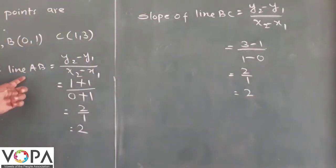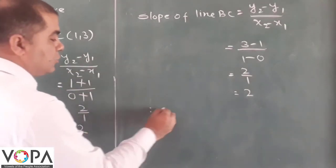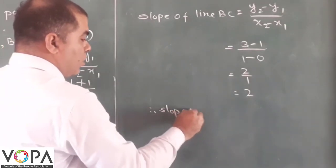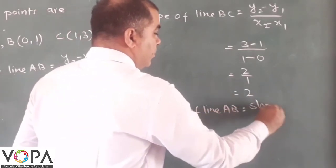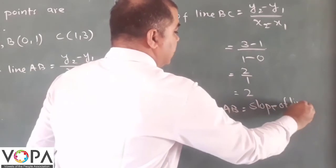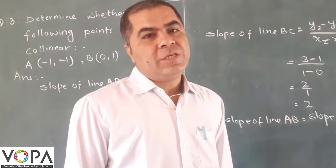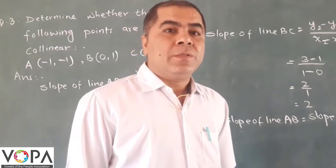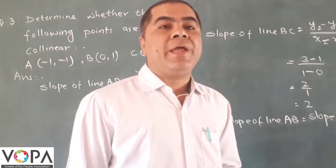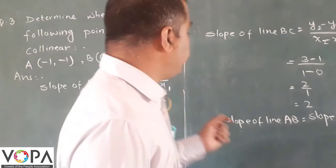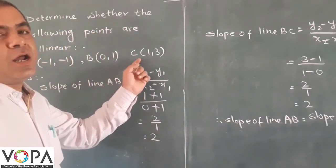The slope of line AB is 2 and the slope of line BC is also 2. That is, slope of line AB equals slope of line BC. The slope of two lines is equal, then the points on these two lines will lie in the same line. It means that the points A, B, and C are collinear.